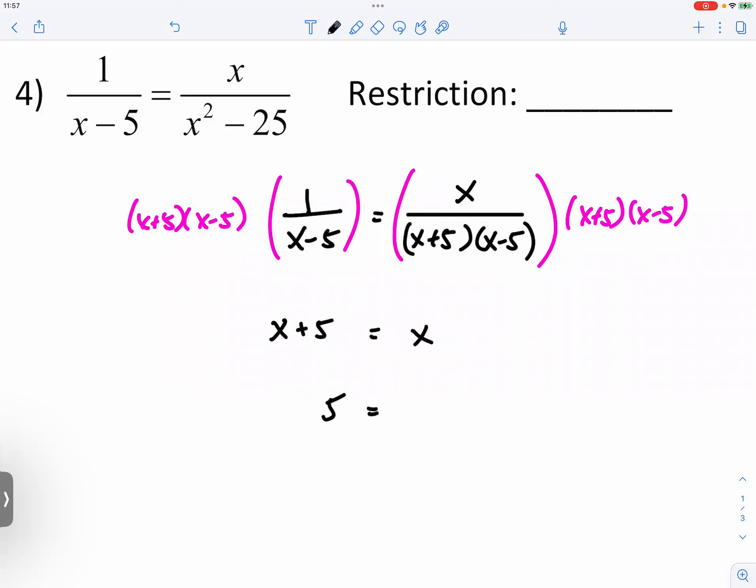And then you subtract x on both sides, we have 5 equal to 0. Oh, by the way, I forgot to write down the restrictions - x cannot be 5, x cannot be negative 5. My bad.